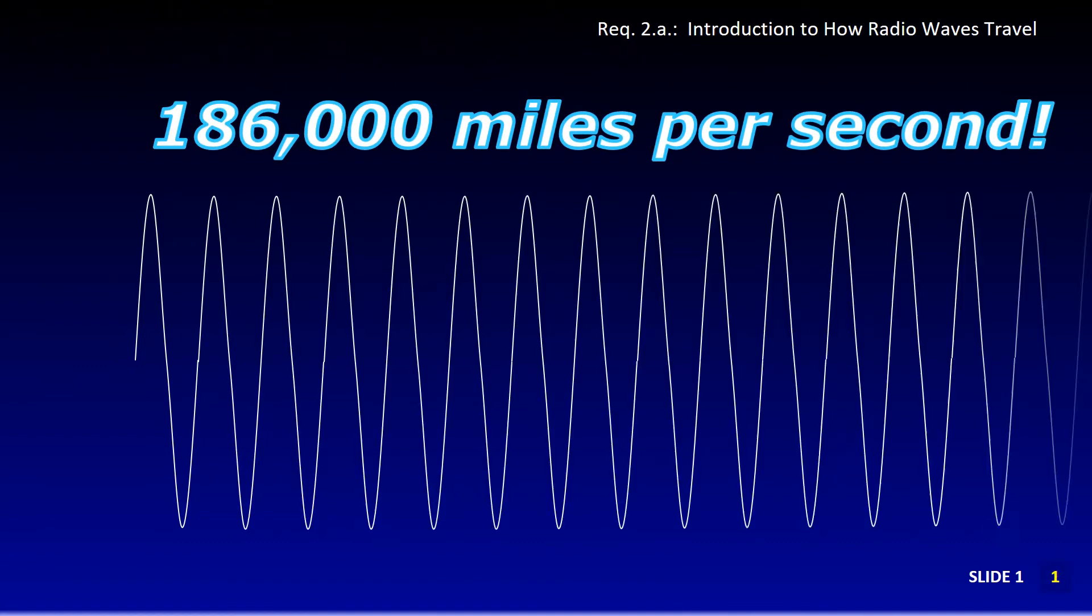Just how fast is the speed of light? It is 186,000 miles per second.